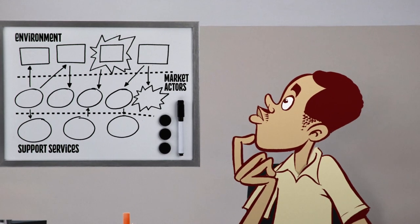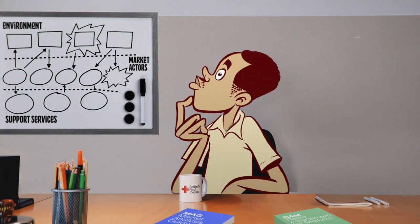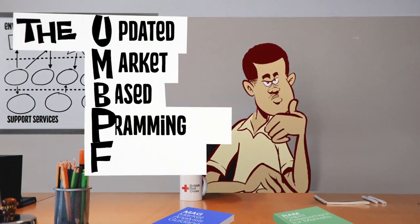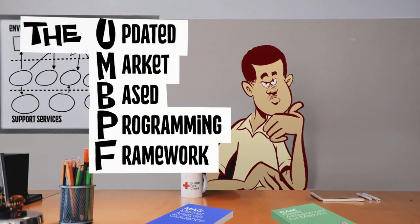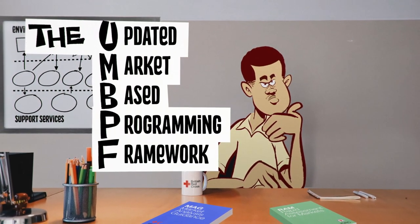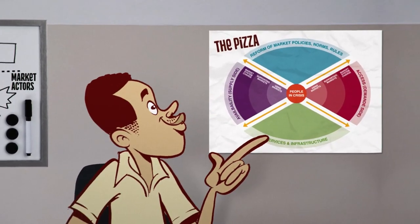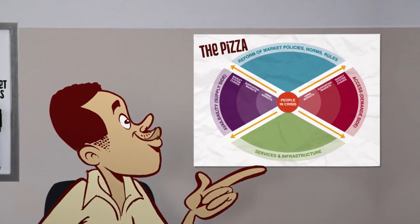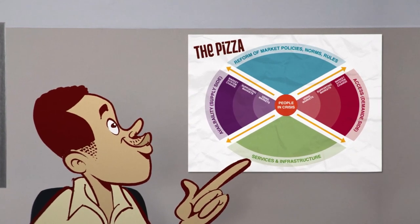However, it's not that easy to identify the appropriate ones. That's why we're using the OOMPH, which doesn't exactly roll off the tongue. So we came up with a catchier label for this response analysis tool – the PIZZA. We will try to illustrate how the PIZZA can be used to identify appropriate market-based interventions.